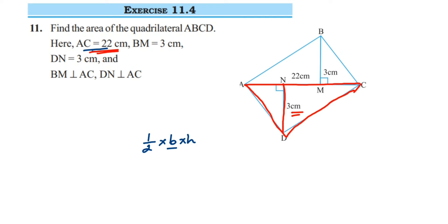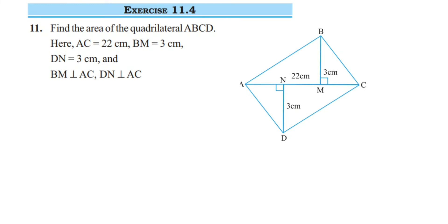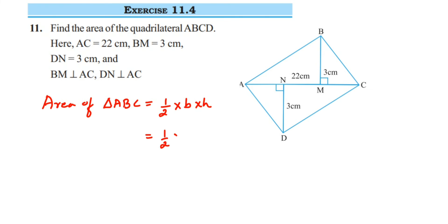Base and height both we know; we are going to substitute. So here is the solution: area of triangle ABC is equal to half into base into height. Base is AC = 22 and height is BM = 3. Cancel 2 and 22 to get 11. So 11 into 3 is 33 — we get 33 cm².